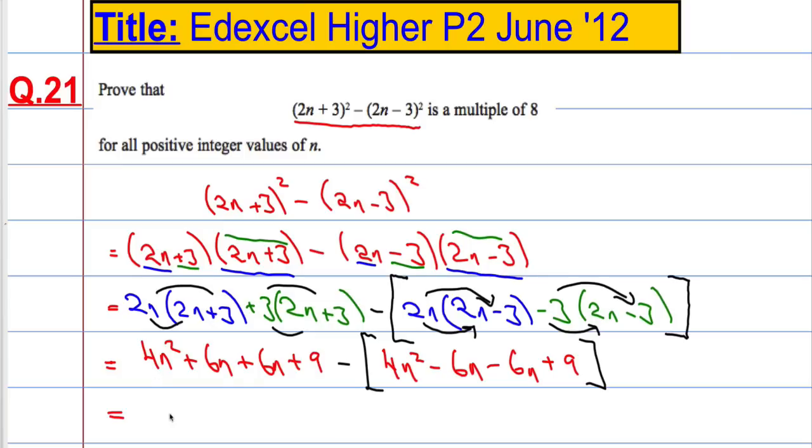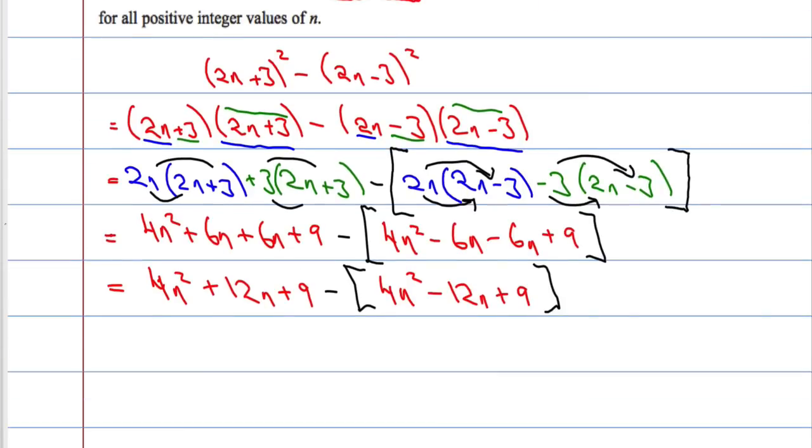Edging closer towards the solution. We're just tidying up now: 4n² plus 12n plus 9. Eventually we're going to have to subtract everything that's in here. Tidying up what's inside the brackets, we get 4n² minus 12n plus 9. Now's the point at which I'll introduce that negative across this bracket. So leave everything before it the same: 4n² plus 12n plus 9.